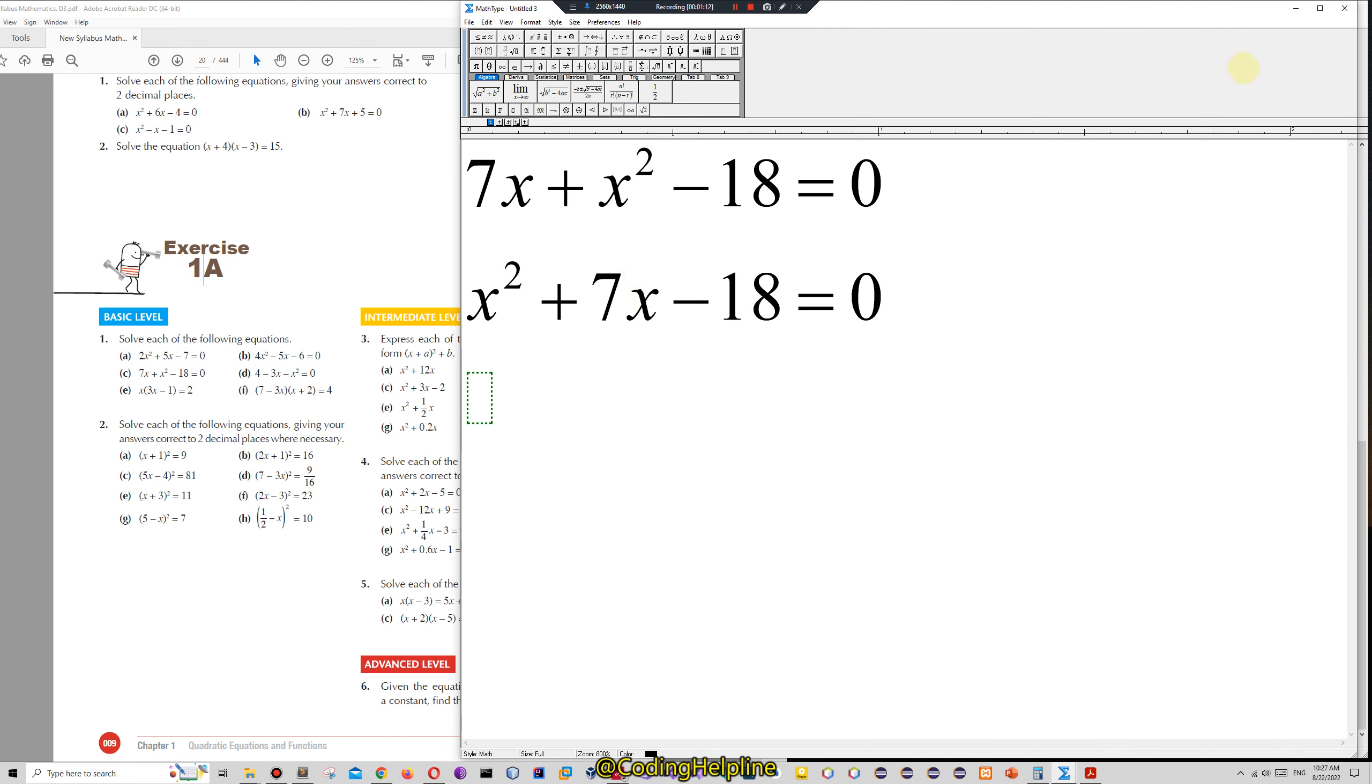Now we need to find a pair of numbers that will multiply to give the constant and sum to the coefficient of x. When we sum that pair, we will get 7. So we start.